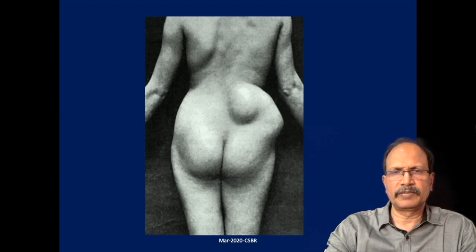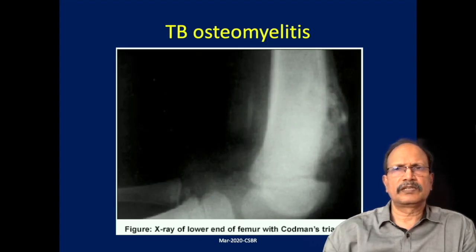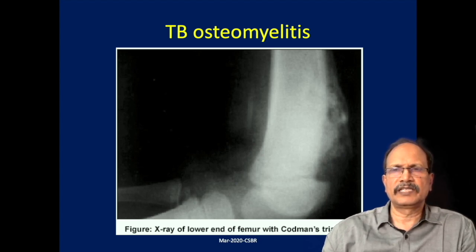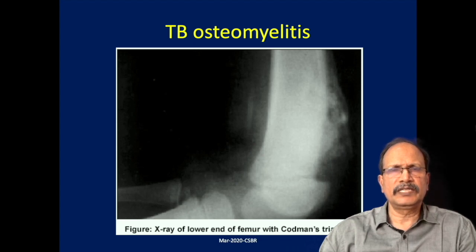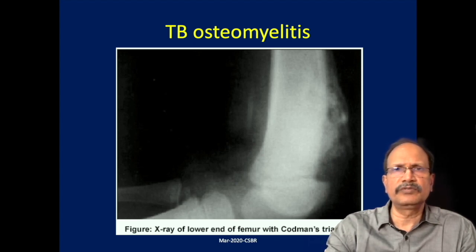This is the X-ray appearance of tuberculosis osteomyelitis. You can see that the periosteum is lifted and there is production of new bone, which produces a triangular shadow called Codman's triangle. Codman's triangle is classically described in association with a bone tumor known as osteosarcoma, but anything that lifts and irritates the periosteum may be associated with new bone formation and Codman's triangle. It is not confined exclusively to osteosarcoma and may be seen in the chronic variety of osteomyelitis too.